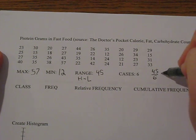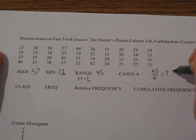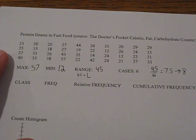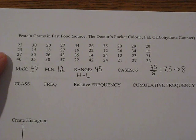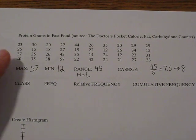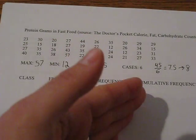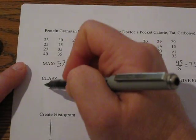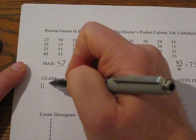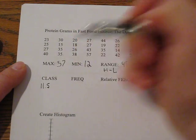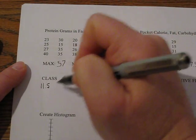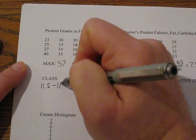If you do the division here, the interval is 7.5, so we're going to round that up to 8. So 8 is going to be the distance in each of our classes. Now our minimum is 12, but according to the bounds of 12, if you make a boundary of 12, it would go from 11.5 to 12.5. We're going to make that class start at 11.5 and go up 8 units to 19.5.